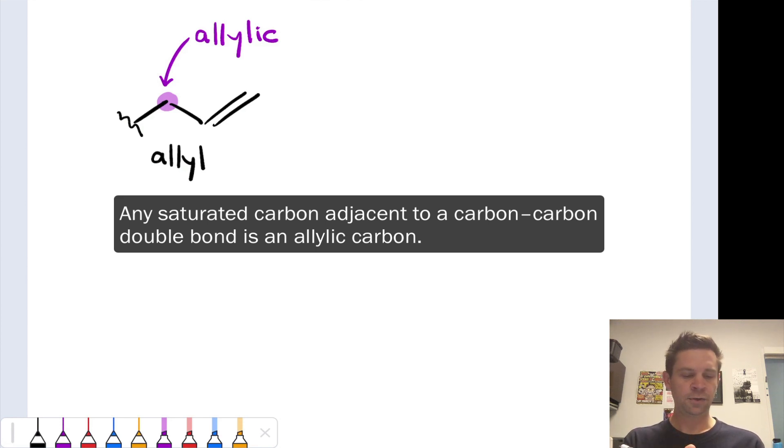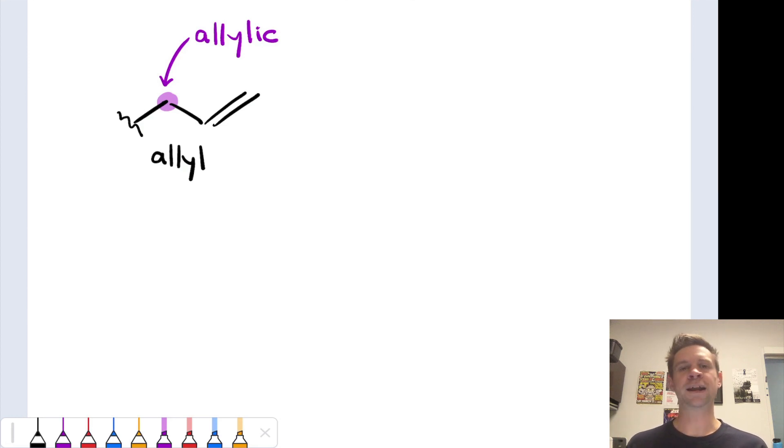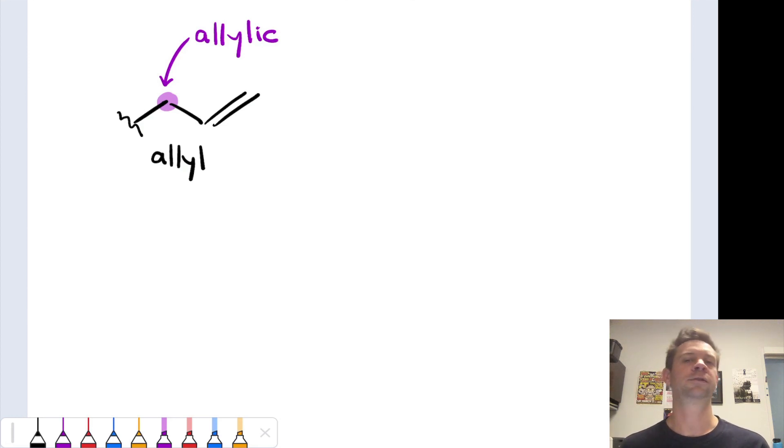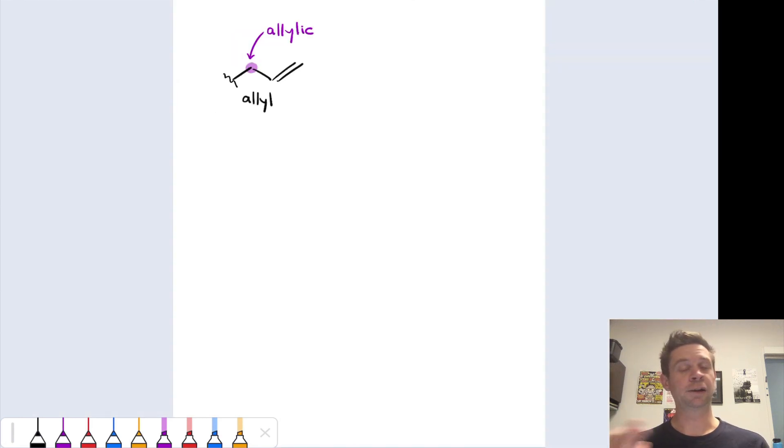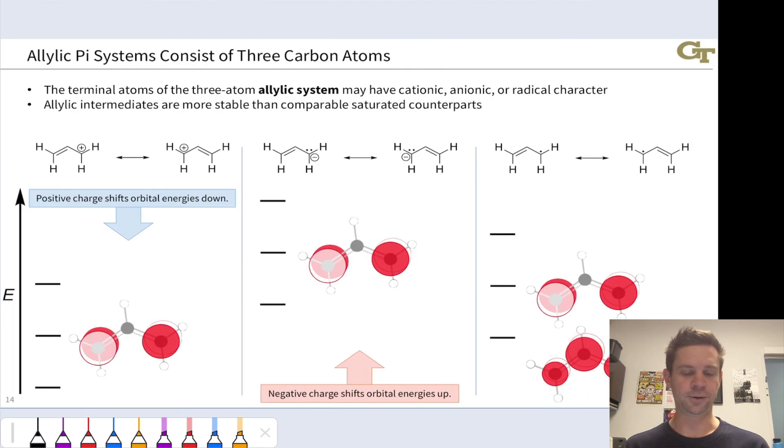This is because those reactive centers—cations, anions, and radicals—adjacent to this double bond can engage in resonance. So we end up with delocalized radical character, delocalized positive charge, or delocalized negative charge. Allylic systems are relatively stable, and you'll see allylic intermediates. You probably already have seen allylic intermediates in reactions, and we'll make that point in this video as well.